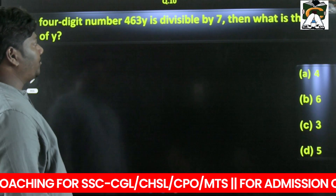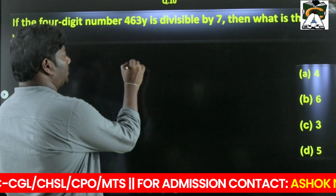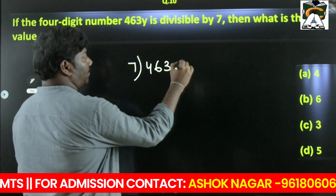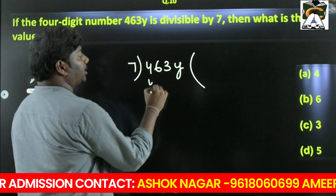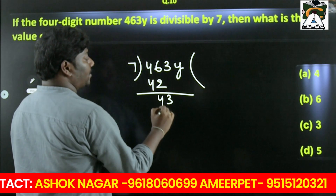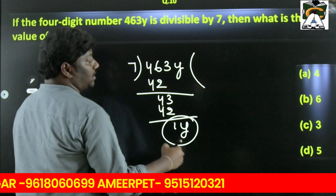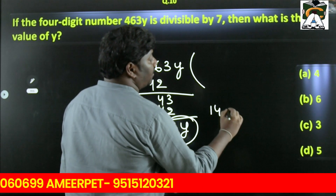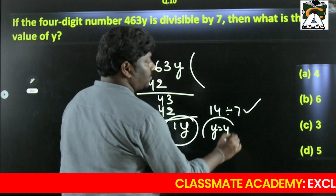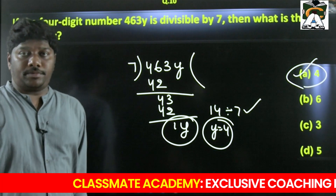A four-digit number 46xy is divisible by 7. Looking at the last part — 421y — we know that 14 is divisible by 7, therefore y = 4. So the value of y is 4.